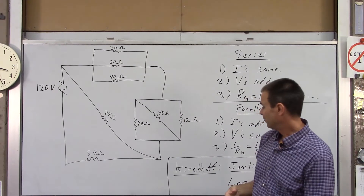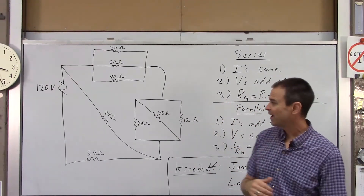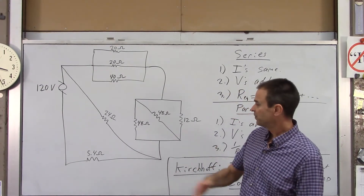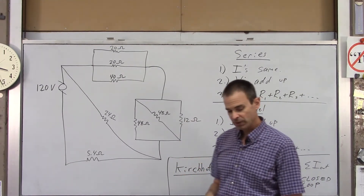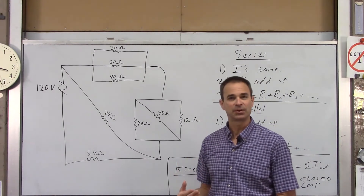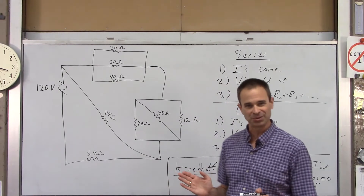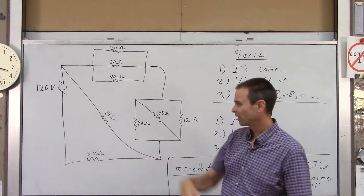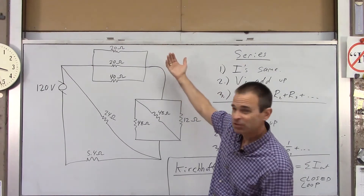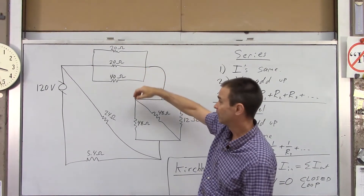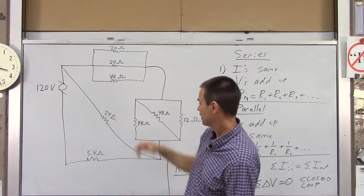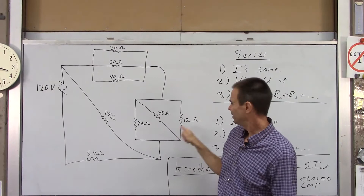Now we're going to find every current and every voltage drop for every resistor in this circuit. We'll reduce and simplify the circuit step by step. The three resistors on one side are clearly in parallel — even though one is diagonal, they're still parallel. Whenever Joe Electron enters a branch and ends up at the same exit point regardless of which resistor he takes, that's parallel.